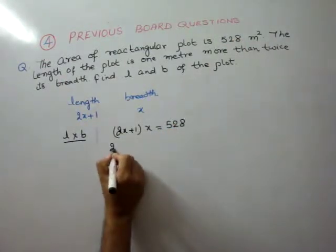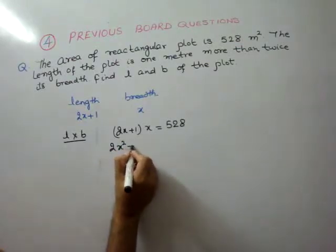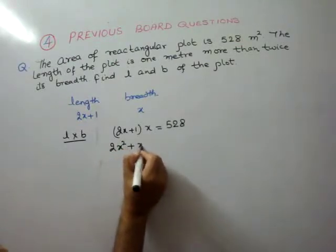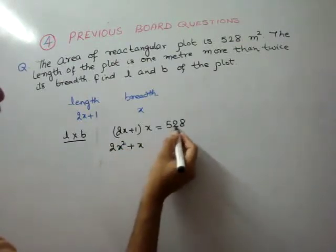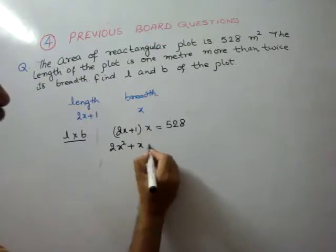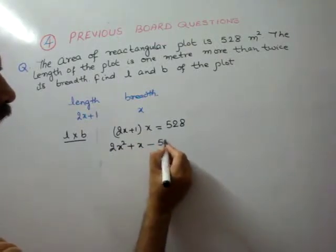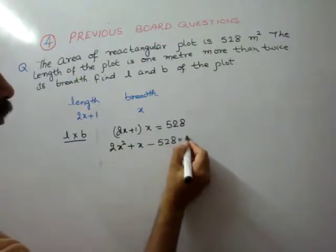So the area of the plot gives us 2x squared plus x, and bringing everything to one side: 2x squared plus x minus 528 is equal to 0.